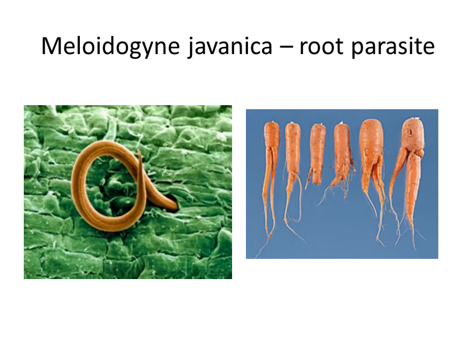Meloidogyne javanica is such a species — it is a root parasite. Sometimes it causes damage to crops such as carrots, invading and damaging them. It is an invasive species with origin from the island of Java, now spread all over the world, and is one of the pests of the domestic carrot.